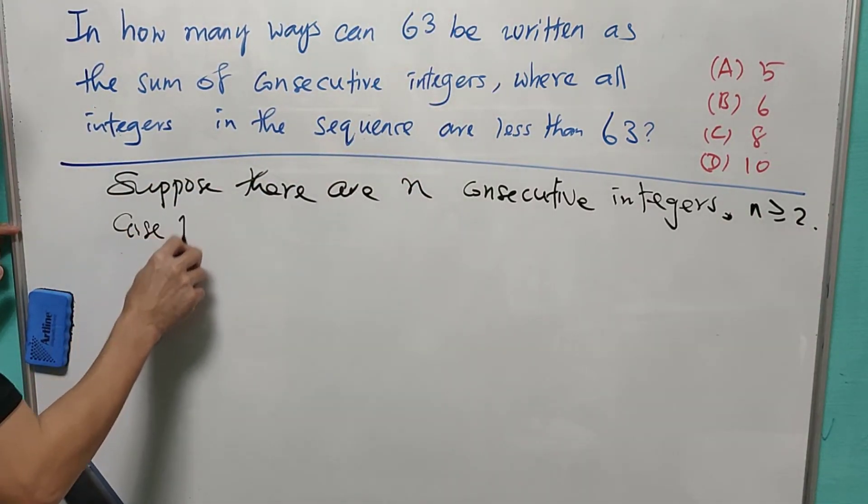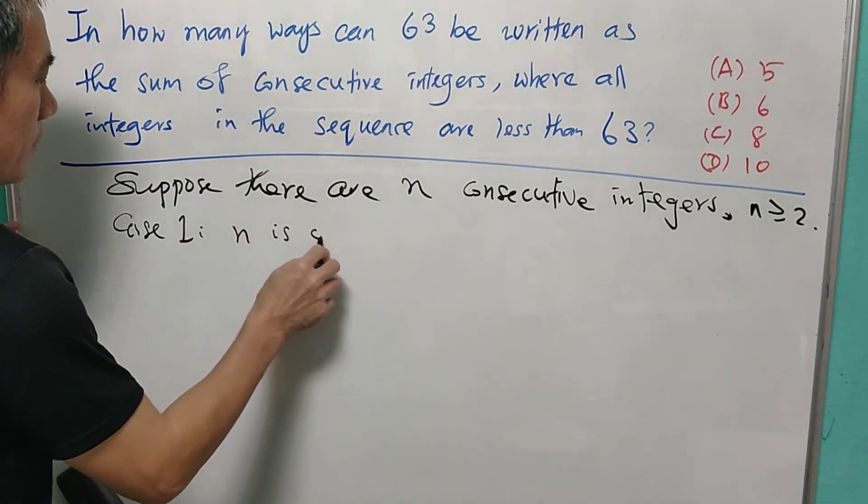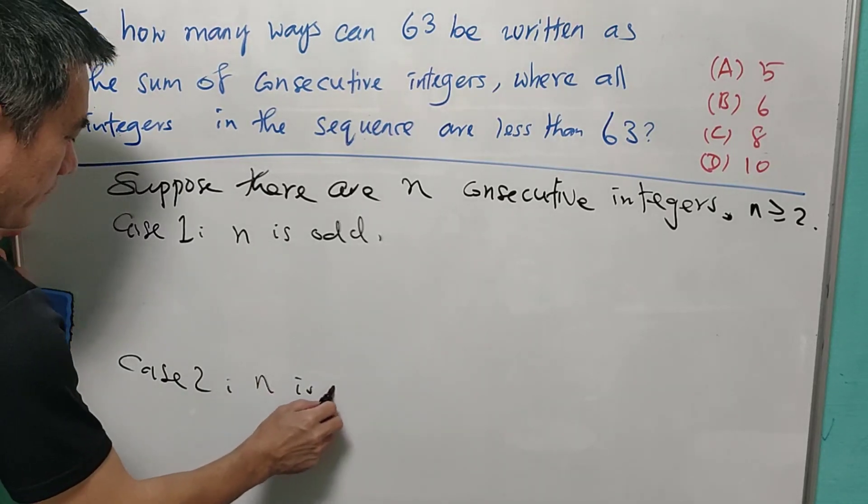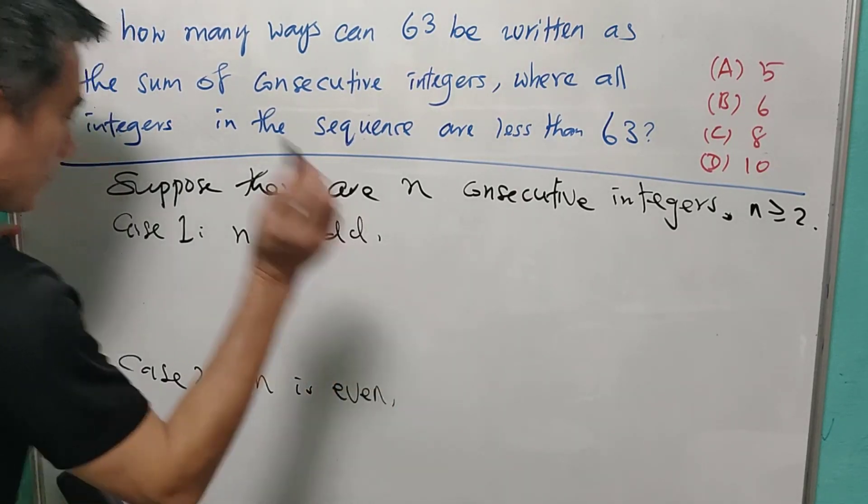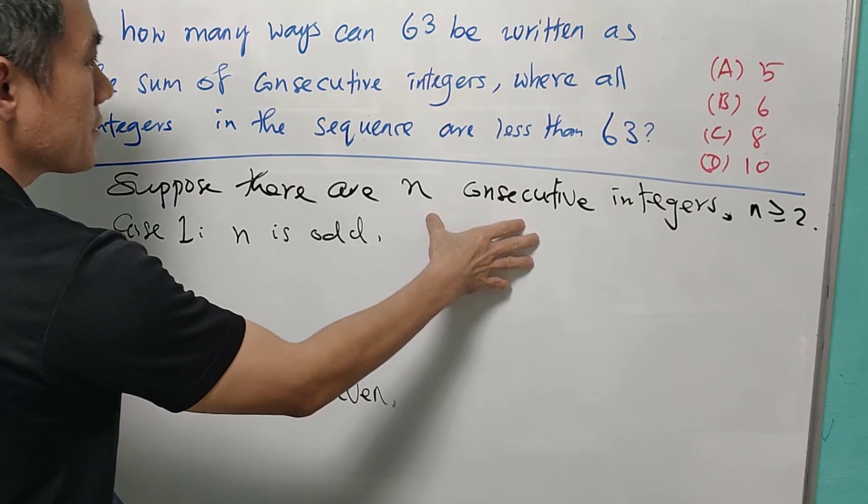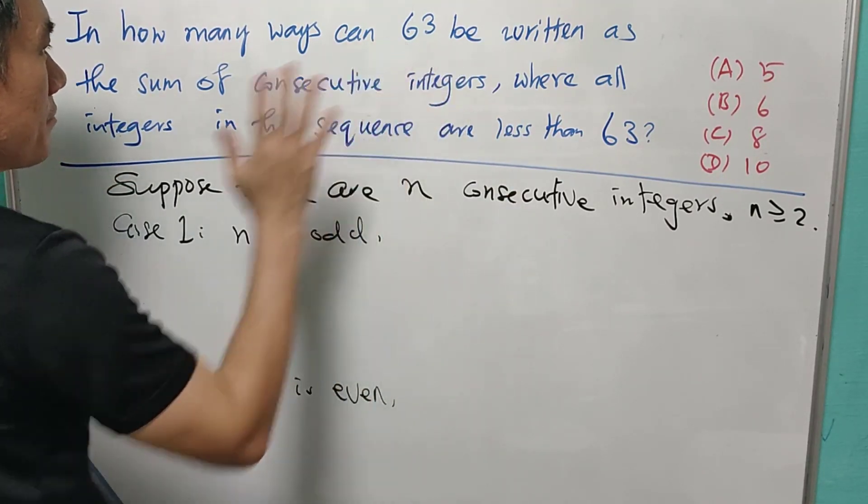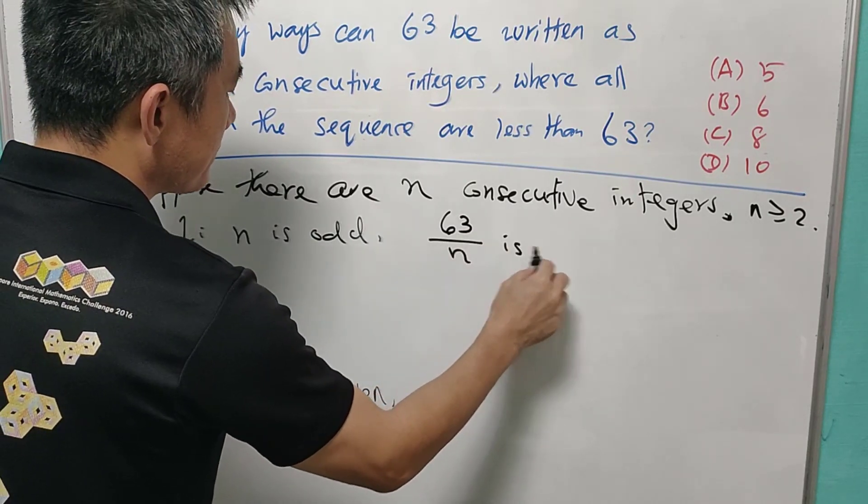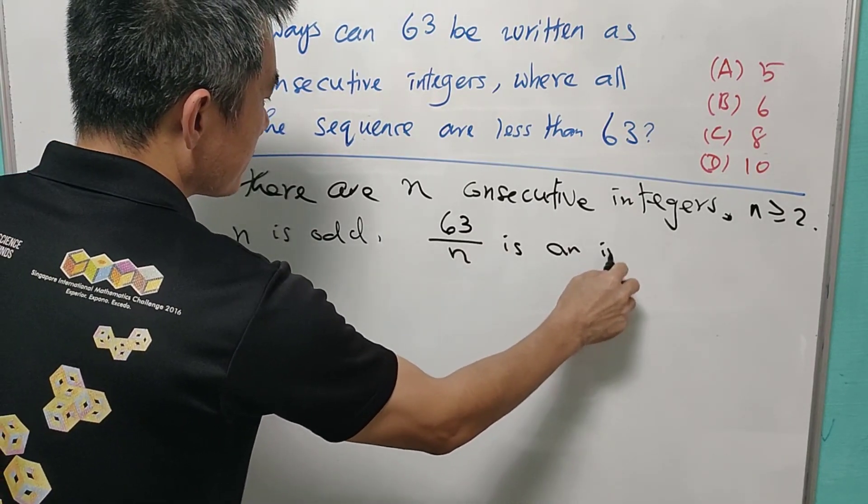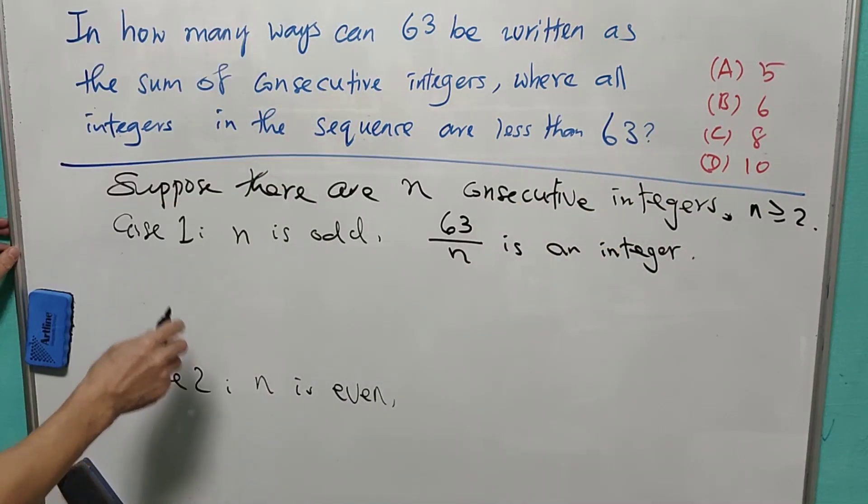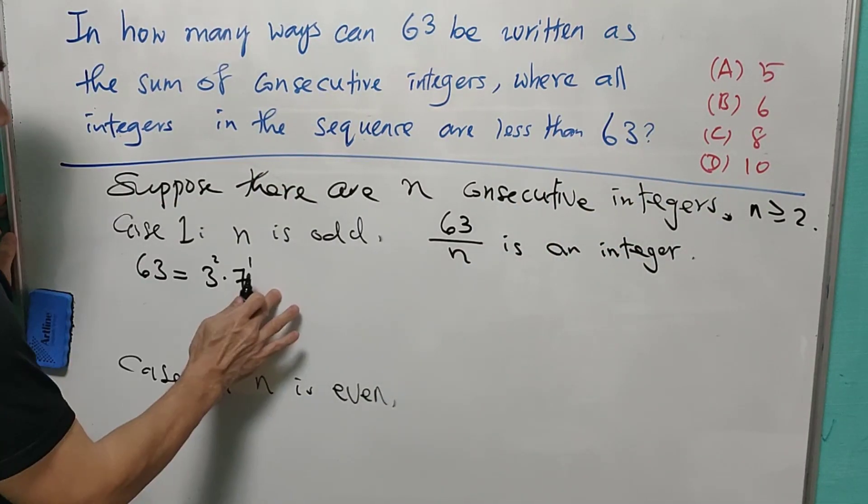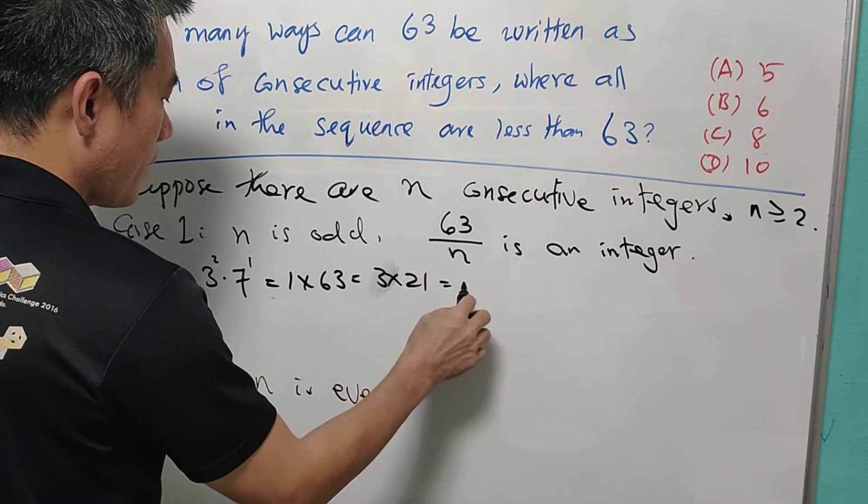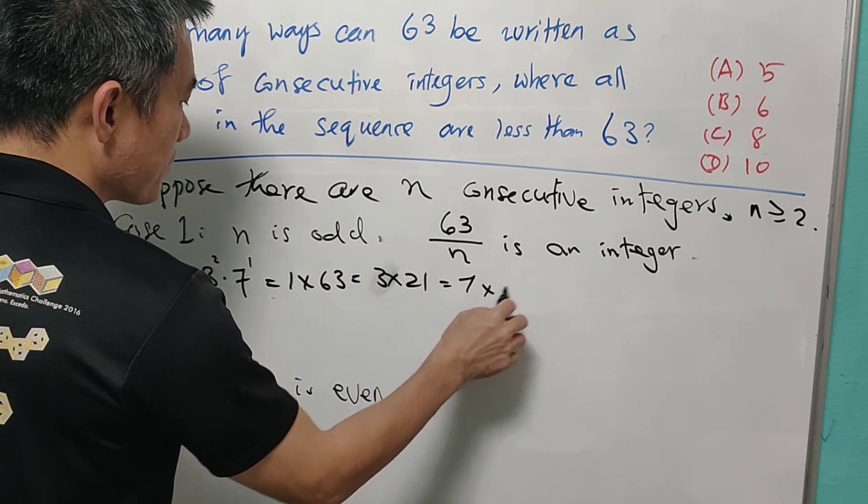Case 1: n is odd, and case 2: n is even. When n is odd and the sum of n consecutive integer is 63, meaning that the average is an integer. And also 63. So it can be written as 1 times 63, 3 times 21, and 7 times 9.